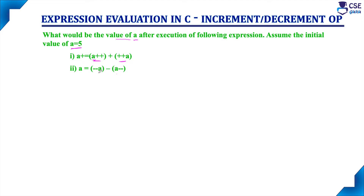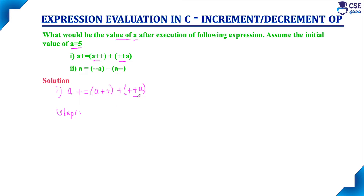This is the purpose of the post and pre increment and decrement operators. The first problem is A plus-equal-to A-plus-plus plus plus-plus-A. Now this expression can be interpreted step by step. For increment and decrement operators, they are right-associative, so we need to solve the rightmost expression first. The rightmost expression here is a pre-increment operator.